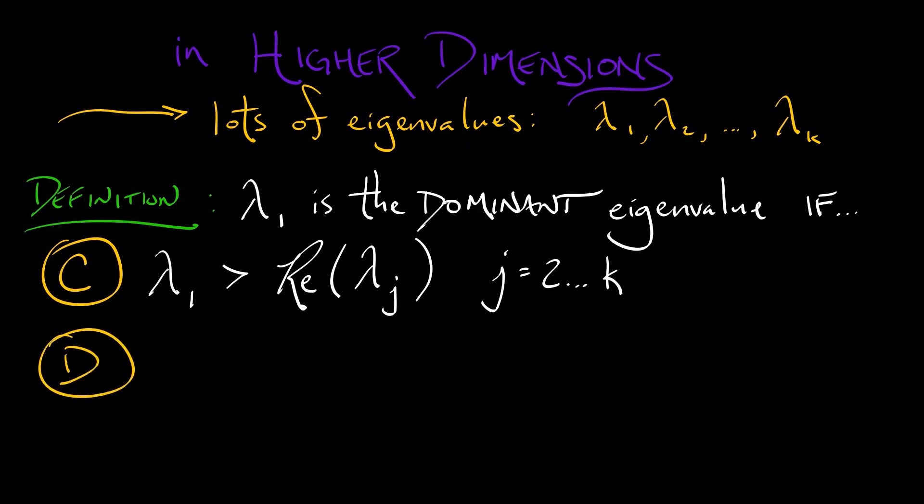And in discrete time, what we need is that lambda 1 in absolute value is bigger than lambda j in absolute value for all other values of j. That one looks very similar. But wait.